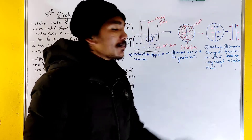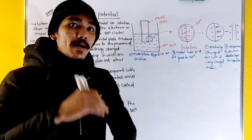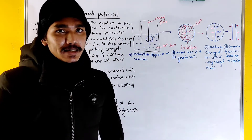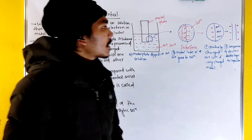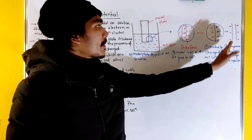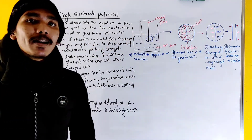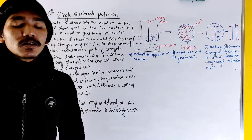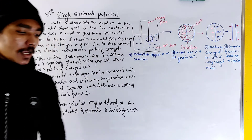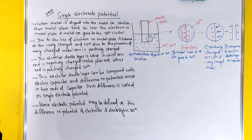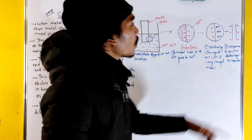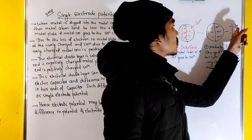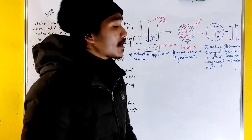One side carries a negative charge and the other side is M-plus positive. If we summarize how to compare the double layer capacitor, we compare it as a negative charge on one side.